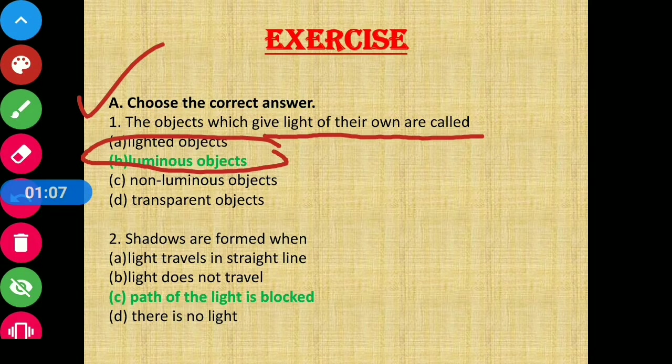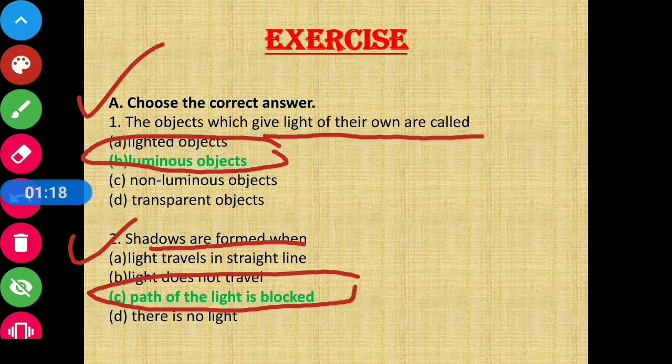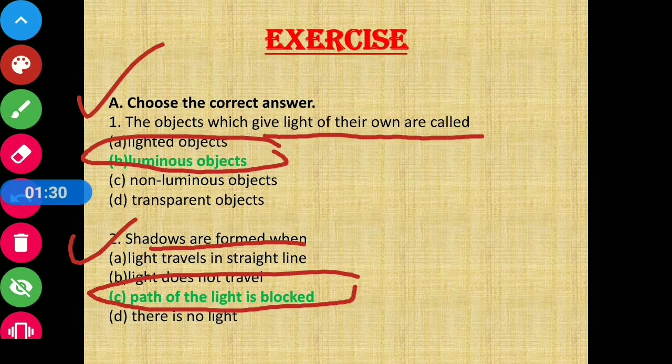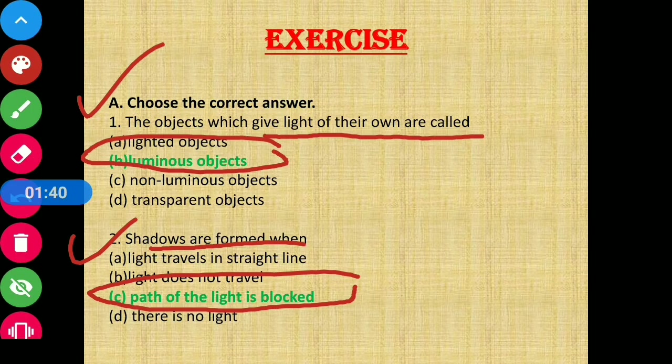Question number two: Shadows are formed when - shadows means parchai. Parchai kab form hoti hai? When path of the light is blocked. Jab light ka rasta kisi wajah se block ho jata hai, to uske piche jo dark region ban jata hai, usi region ko kaha jata hai shadow. The area where light cannot reach is called shadow. So option C is the correct answer.